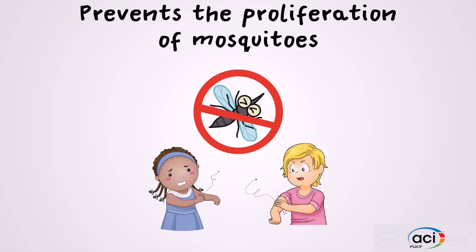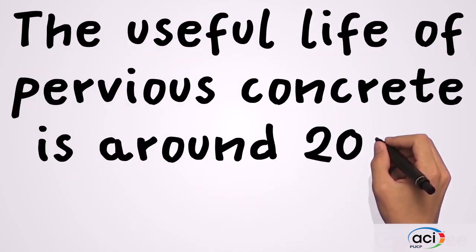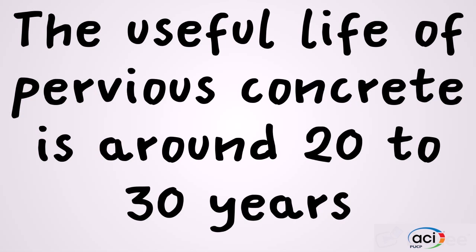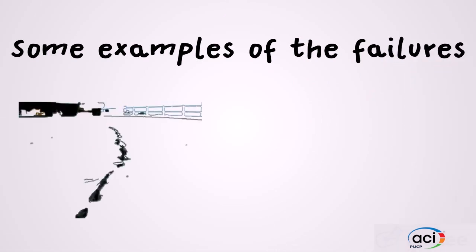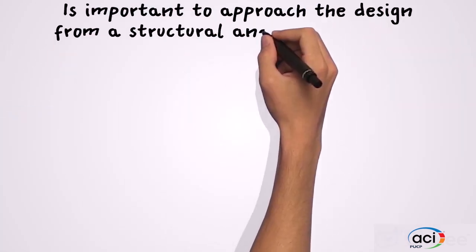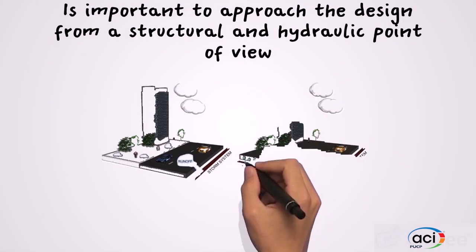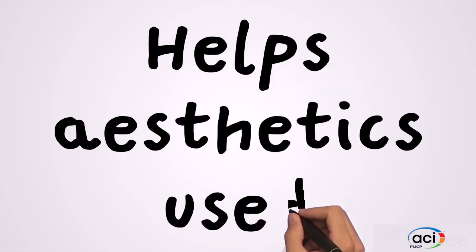From a health point of view, the solution to the problem of surface run-off from rainwater by filtration will avoid the formation of stagnant ponds that cause the proliferation of mosquitoes that cause diseases such as malaria and dengue. The useful life of pervious concrete is around 20–30 years. Not only proper maintenance will allow a long duration; a good design and construction is important too. Some examples of failures are cracking, clogging of pores, and freeze-thaw cycles. For these reasons, it is important to approach the design from both a structural and hydraulic point of view, so that it can withstand applied stresses and manage water during a maximum rain event.